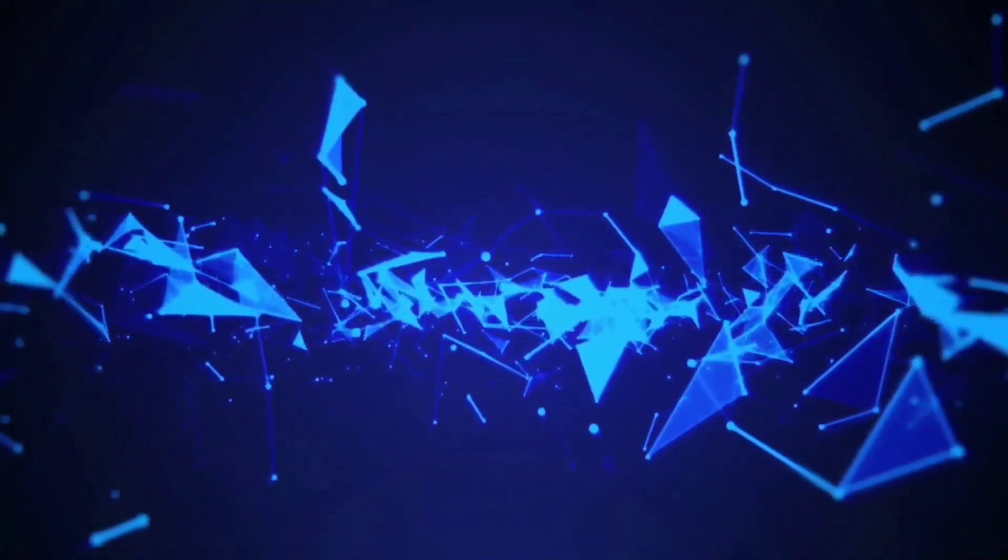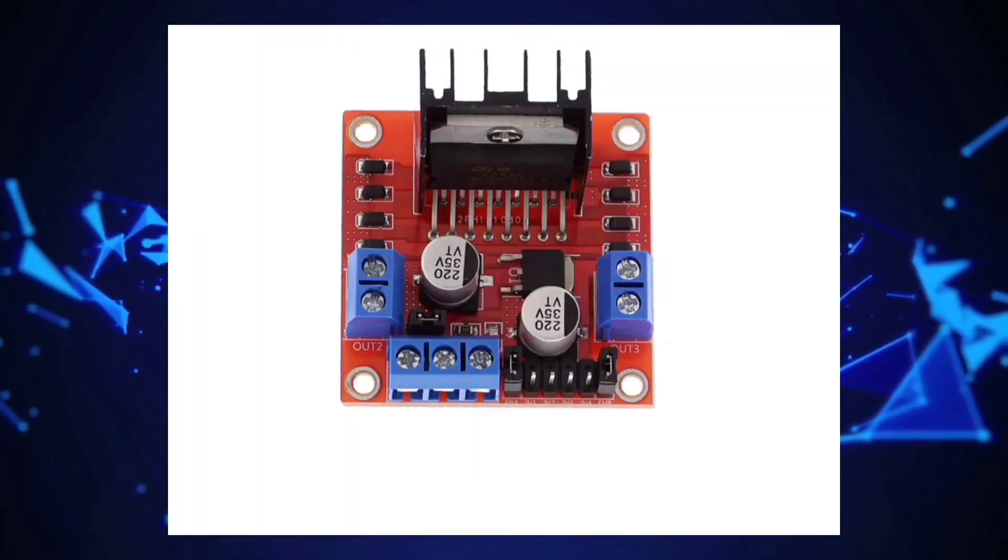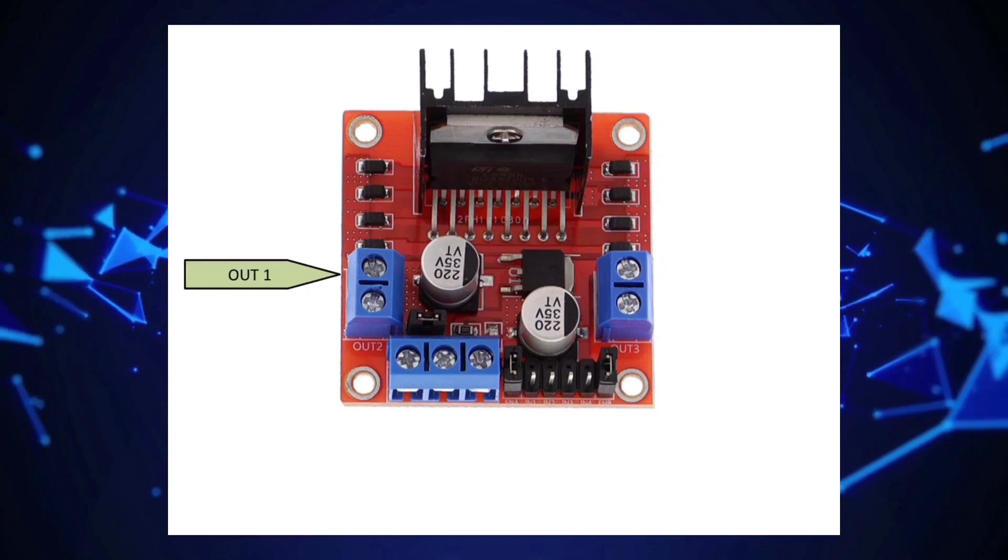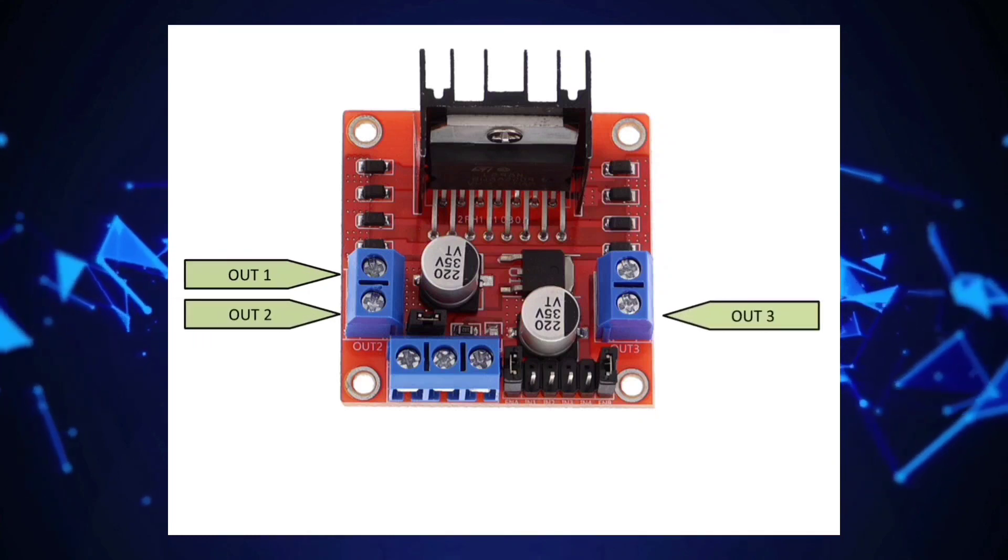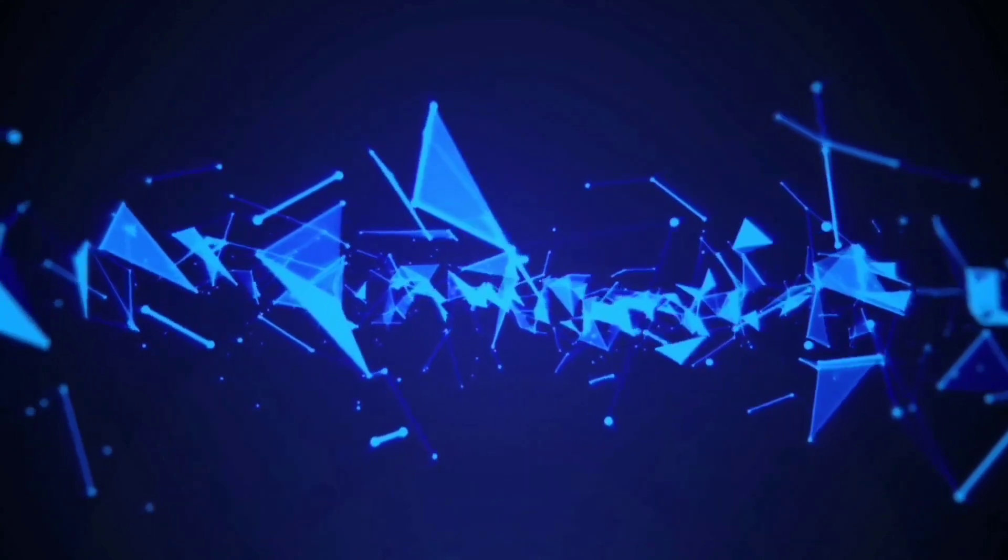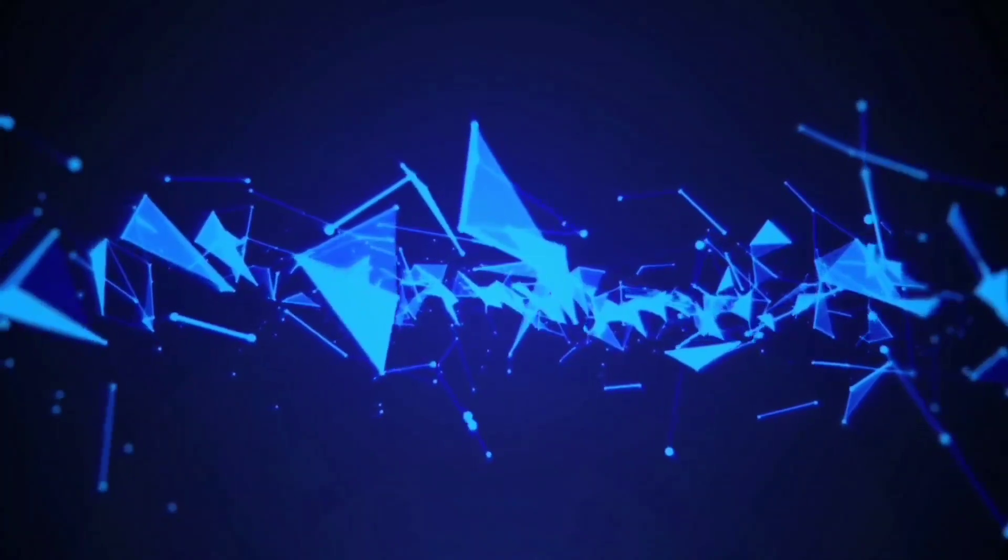The L298N requires external components such as power supply connections, motor connections, and control signal connections. These connections are typically made using screw terminals or male header pins.